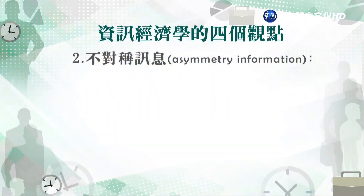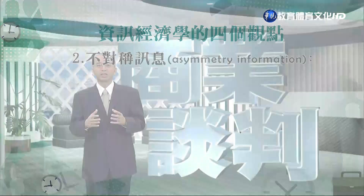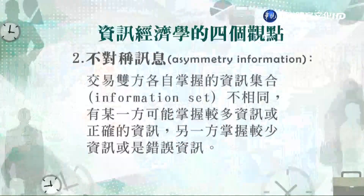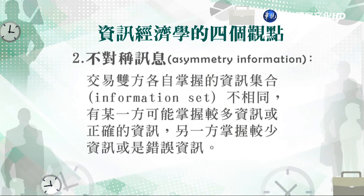第二個叫做不對稱的訊息（asymmetric information）。同學要注意，不對稱訊息跟不完全訊息的意思不完全相等。所謂不對稱訊息是指交易的雙方各自擁有的資訊集合並不一樣，有可能某一方掌握比較多或正確的資訊，另一方掌握比較少或錯誤的資訊。例如在買賣房屋的過程當中就是如此。